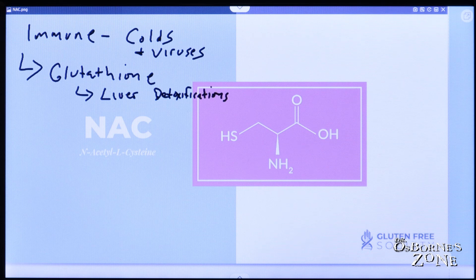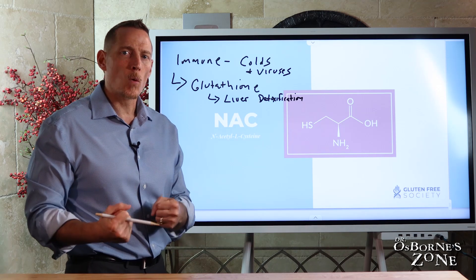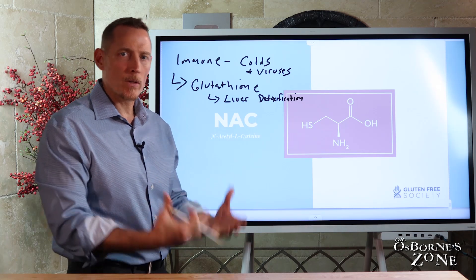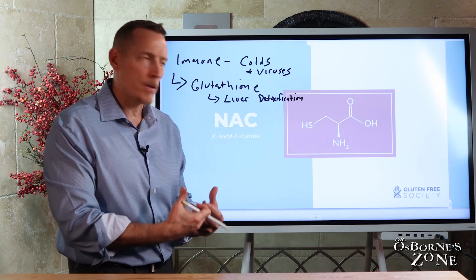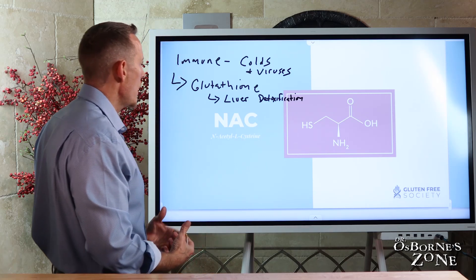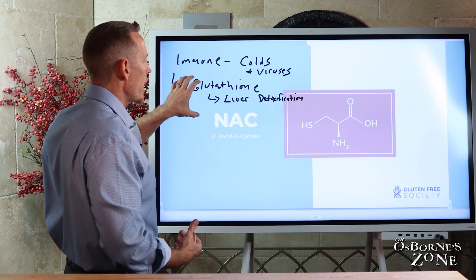Glutathione's primary role is to aid the liver in the detoxification of environmental pollutants and toxicants. When you don't have adequate glutathione, your liver basically can't do its functionality as well — it cannot detoxify as well. This can increase the body's burden and therefore can increase the risk of developing things like chronic degenerative inflammatory diseases and autoimmune conditions. So the body needs to be able to produce glutathione.